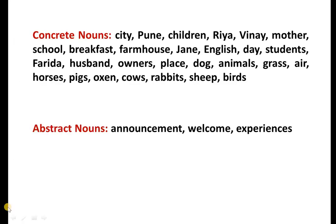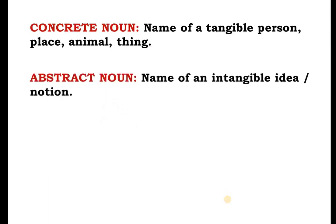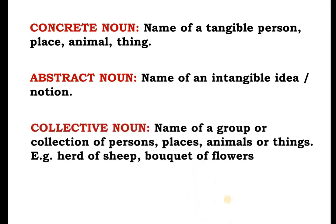We now move on to concrete nouns and abstract nouns. Concrete nouns are very tangible — things that you can see and that are physically present. Abstract nouns are those which you cannot actually see as any particular thing; they are intangible. Concrete nouns are names of tangible persons, places, animals or things. Abstract nouns are names of intangible ideas or notions. We also include collective nouns here — a collection of persons, places, animals or things. For example, in 'herd of sheep', herd is the collective noun; in 'a swarm of bees', swarm is the collective noun.